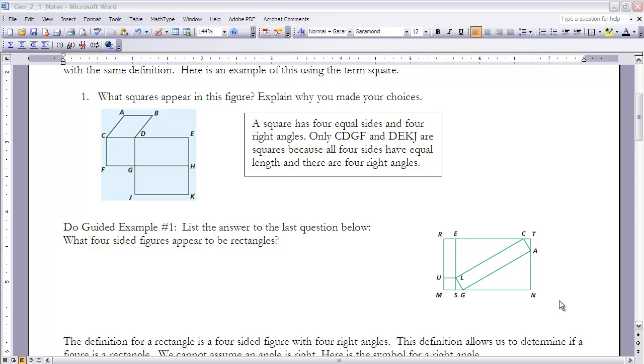As you look at that, here's the ones that I feel look like they're probably squares. That's CDGF and DEKJ. The reason why I picked those to be squares is it looks as though they have four equal sides and four right angles. A square, a more formal definition of a square is that it has four equal sides and four right angles. And those are the only two figures there that would have that. The other figures that are there appear to be either rectangles or parallelograms.